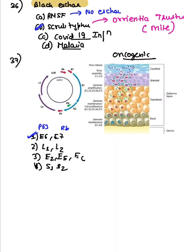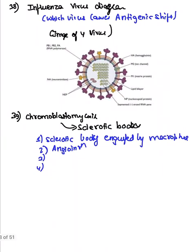A question on viral oncogenesis showed an image. HPV has E6 and E7 genes: E6 inhibits p53 and E7 inhibits the Rb gene. This is the cycle they wanted to test.